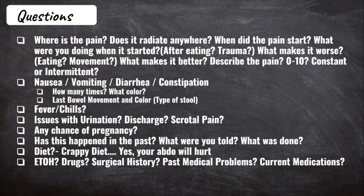Next, let's talk about nausea, vomiting, diarrhea, and constipation. For vomiting and diarrhea, ask how many times per day and what color — the more frequent, the more likely your patient is to be dehydrated. The color of vomit and stool is very important. For example, black, very dark, or bright red stool or vomit signals the possibility of a GI bleed.